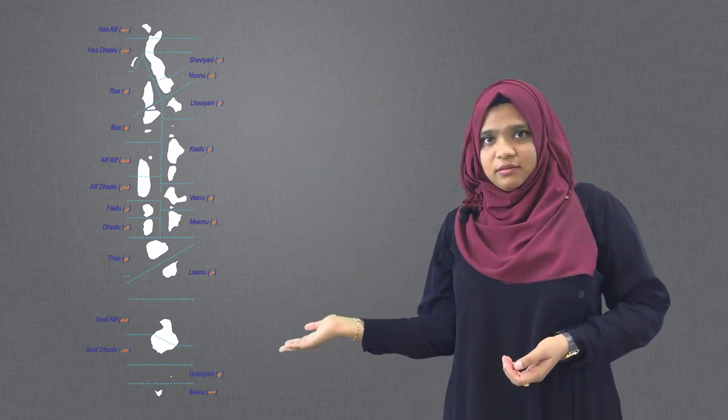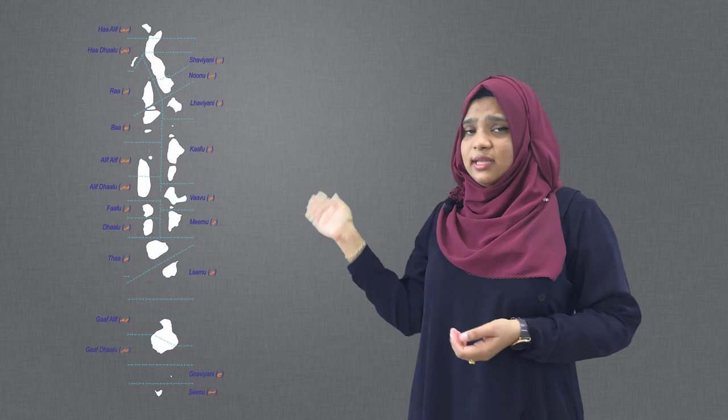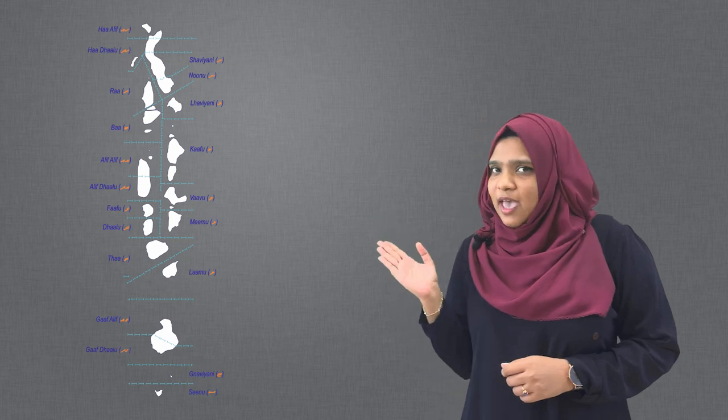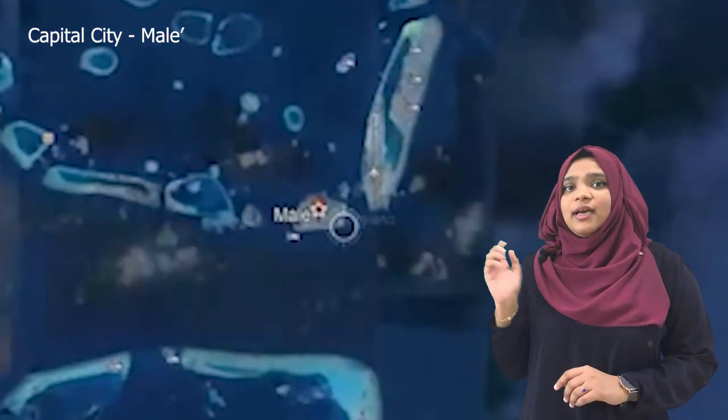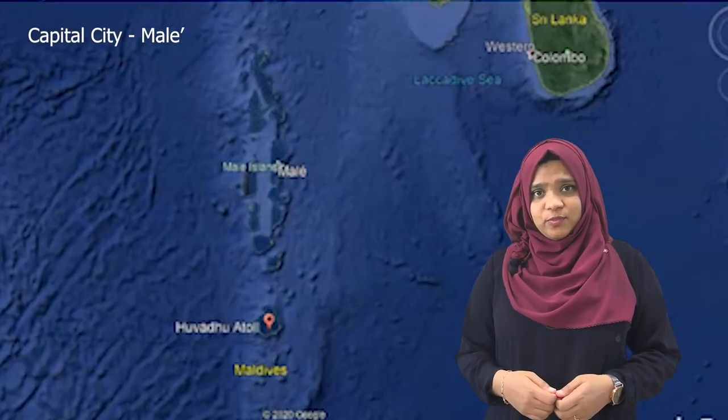Just like how the Divahilators start from Ha, the atolls are named from Ha to Sin — these are the names of the atolls. Here is a question for you: what is the capital city of Maldives and where is it located? Observe the map carefully and think of the answer. It is Malé city and it's located in Kaafu Atoll. Now you know the capital city of Maldives.